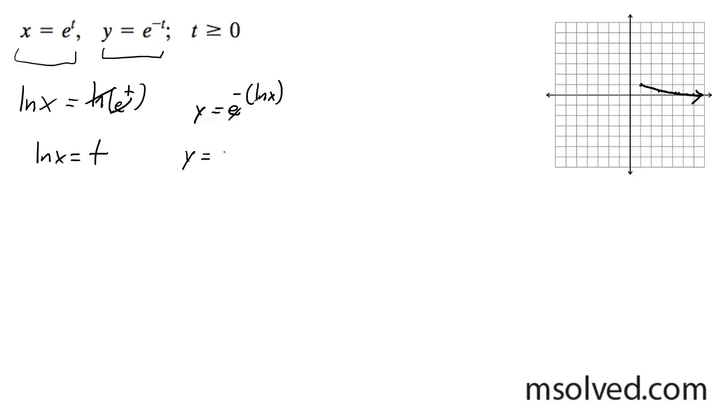Not negative x. 1 over x, excuse me. So that's equal to 1 over x. And then that brings it down. Then multiply it by x.